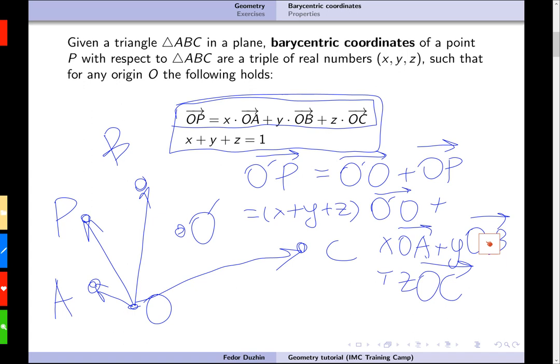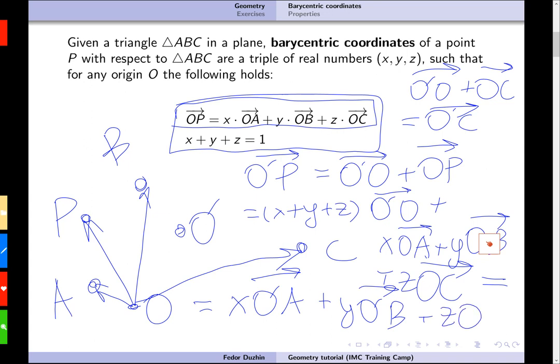Well, but then notice that O prime O plus O C. This is O prime C. And so they did the same for A and the same for B. So which means that X O prime A plus Y O prime B plus Z O prime C, which is what was required.